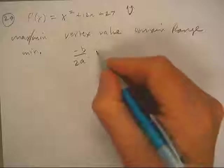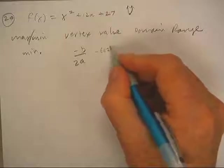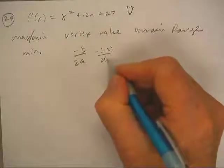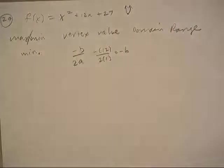There's my formula for the vertex, so I'm going to get 12 there, negative 6.